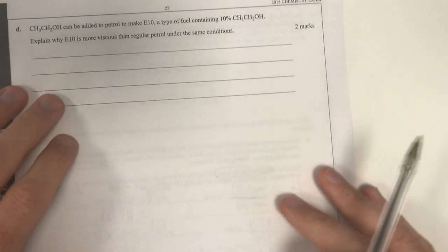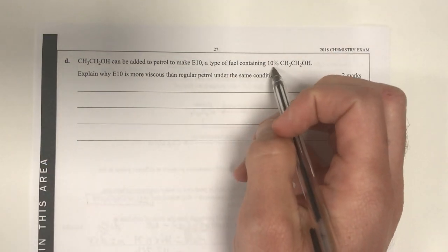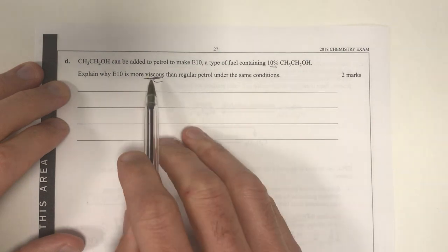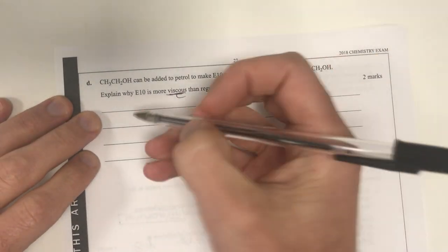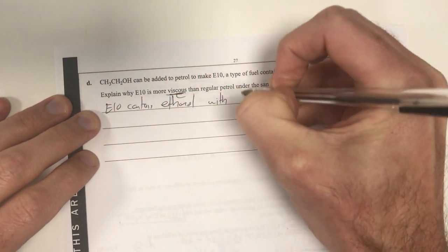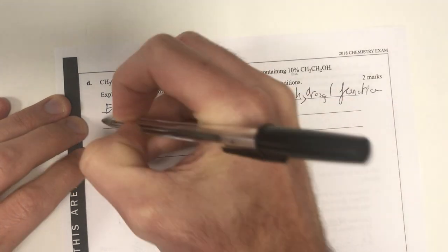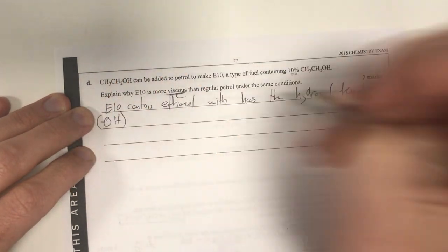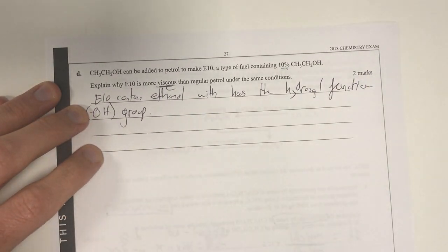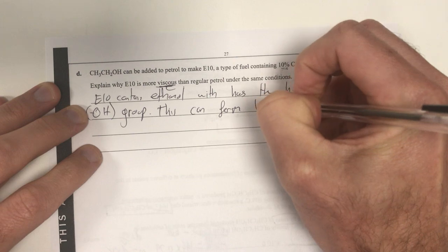Alrighty, let's move on. Okay, and last question here is, ethanol can be added to petrol to make E10, a type of fuel containing 10% ethanol. Explain why E10 is more viscous, viscous is a key word for intermolecular forces, than regular petrol under the same conditions. Well, E10 contains ethanol, which has the hydroxyl functional group, OH functional group. That's really poorly written, hydroxyl functional OH group.